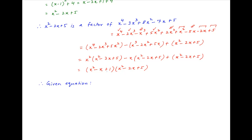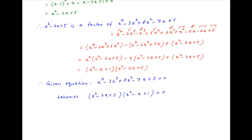Therefore, the given equation x raised to the power 4 minus 3x cubed plus 8x squared minus 7x plus 5 equals 0 can be written as (x squared minus 2x plus 5) multiplied by (x squared minus x plus 1) equals 0. This implies that x squared minus 2x plus 5 equals 0, or x squared minus x plus 1 equals 0.